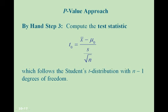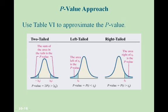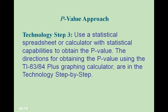For the p-value approach, we calculate the test statistic and then use table 6 to approximate the p-value. For a two-tailed test, the sum of the area in both tails is the p-value. For a left-tailed test, the area to the left of the test statistic is the p-value, and for a right-tailed test, the area to the right is the p-value. We can also use a calculator to obtain the p-value.